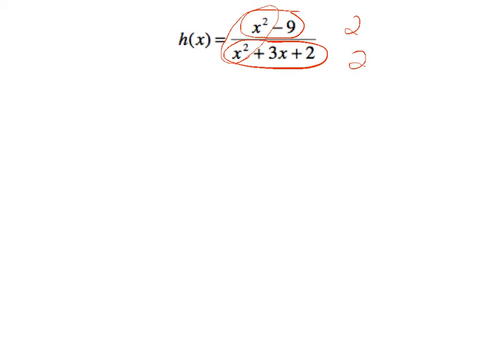And if we divide those terms, we find out that the horizontal asymptote is going to be at y equals 1.